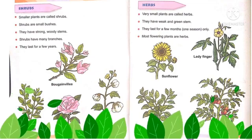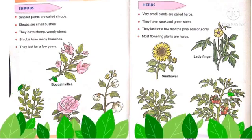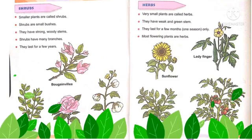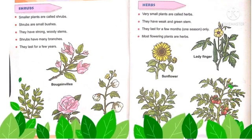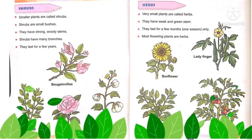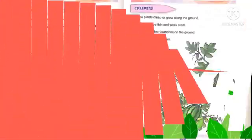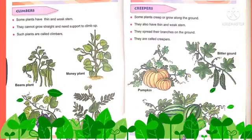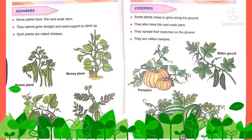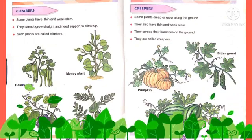Plants that last only for a few months — meaning one season — are called seasonal plants, also known as herbs. Examples are mint, tomato, lady fingers, and sunflower.